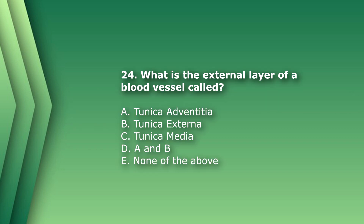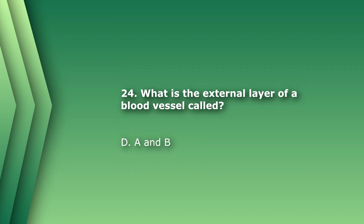Question 25: What is the external layer of a blood vessel called? A) tunica adventitia, B) tunica externa, C) tunica media, D) A and B, or E) none of the above. Tunica media is the middle layer, so that's not it. Tunica externa sounds right because 'externa' means outer. Another name for tunica externa is adventitia. So the answer is D) both A and B — tunica adventitia and tunica externa are the same structure.